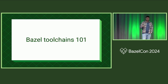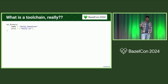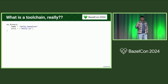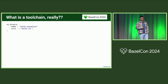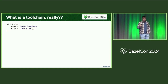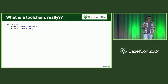First, let's talk about toolchains — what they actually are. The idea of a toolchain is: if I have a programming language, like the Oz language, and I want a rule that compiles a binary for it, somehow I need to get access to a compiler. In Bazel, we have toolchains to facilitate that. But as you can see, when you use this rule, you don't mention the toolchain anywhere — so where does it come from?